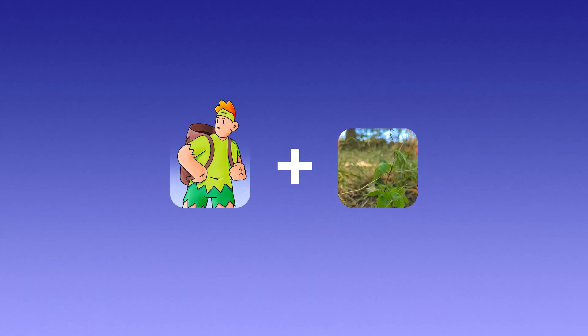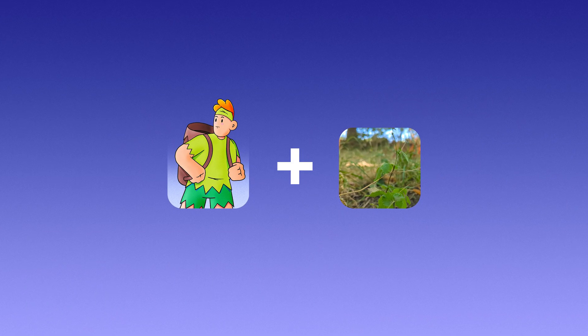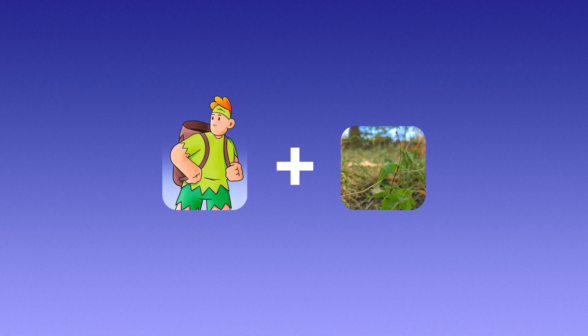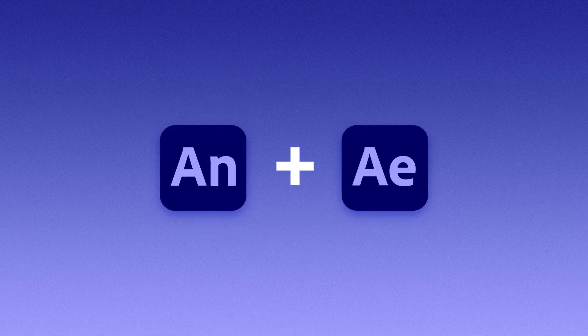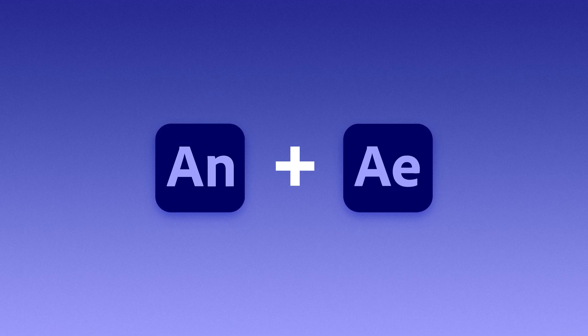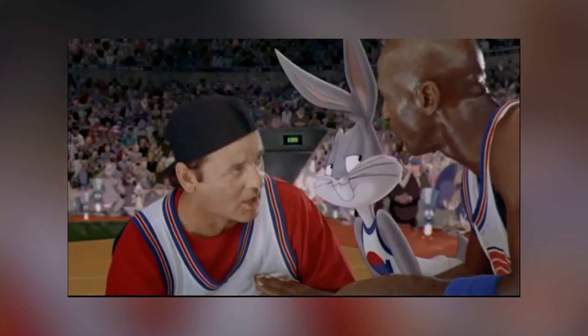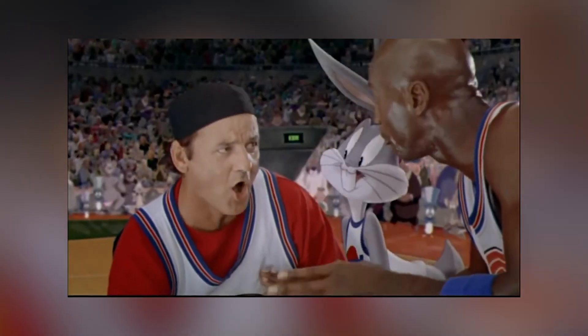This time, we're taking a look at merging 2D animation and live action footage using Adobe Animate and Adobe After Effects. You've probably seen this technique loads of times, most famously perhaps in Who Framed Roger Rabbit, Space Jam, or Gorillaz music videos.